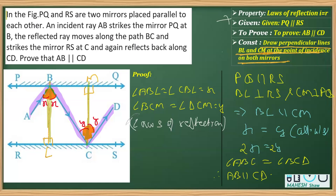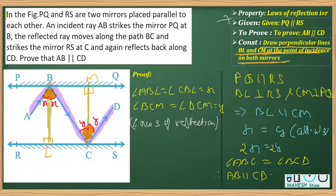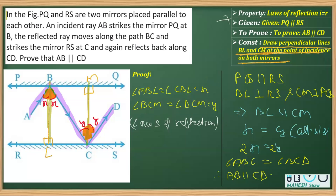The key things to keep in mind are: the laws of reflection on which this question is based, and the alternate interior angles property. The alternate interior angles says that when two lines are parallel, their interior angles on opposite sides of the transversal are equal. We can also apply its converse — when two alternate interior angles are equal, then the lines are parallel.